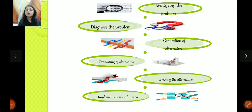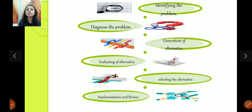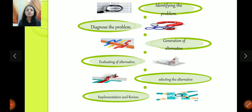And here we have the process of decision making — it's very similar to planning because decision making is a very important aspect of planning. Identify the problem — why do you need to make a decision? Because there is a problem in front of you. Diagnose — what is the root cause of that problem, why has that problem come? Find the alternatives for its solution, evaluate those alternatives in terms of cost, benefits, and risks, select one alternative, and then implement and review. So that's the process of decision making.